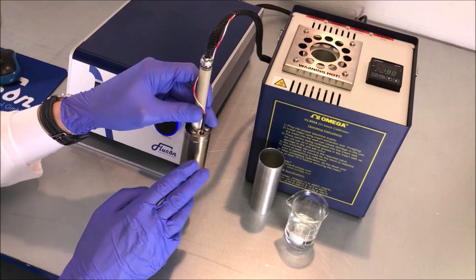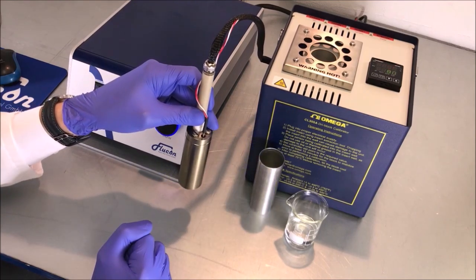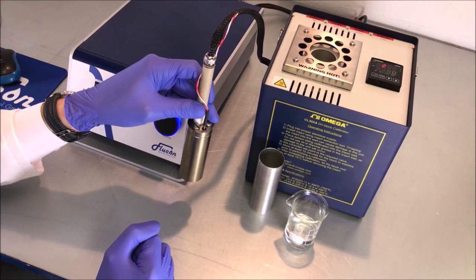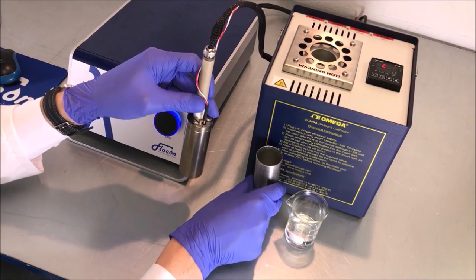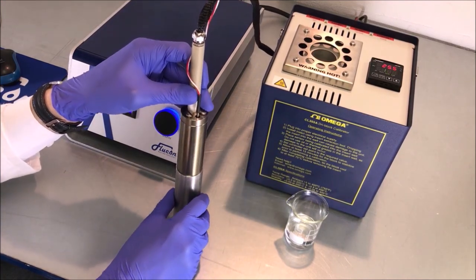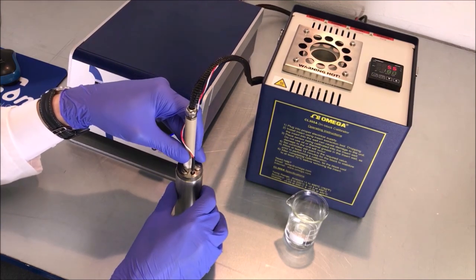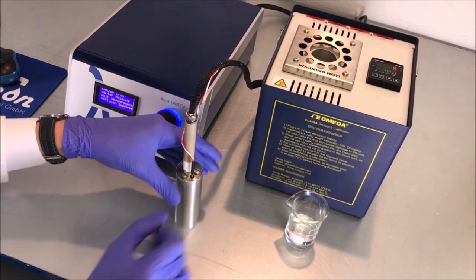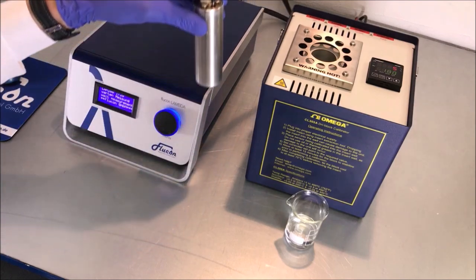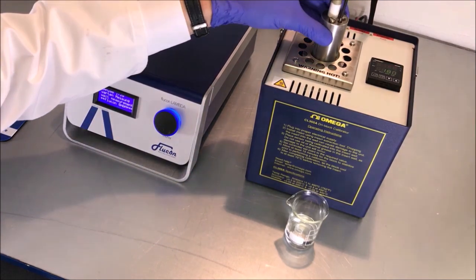Once the cup is screwed on tightly, mount the adapter sleeve which adapts to the inner diameter of the thermostat socket. You may now immerse the sensor into the thermostat.